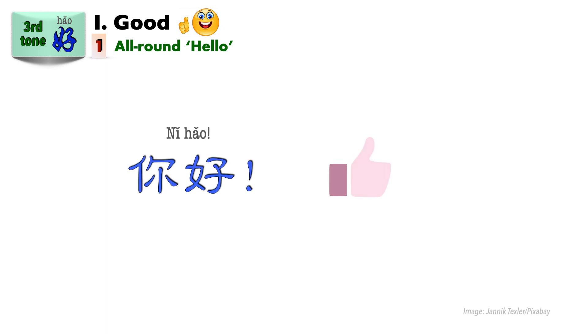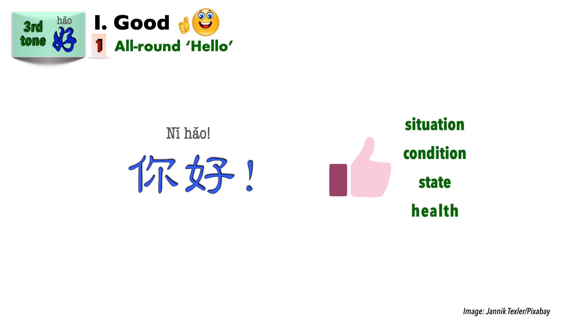So the fundamental meaning of 好 is good, nice, fine. How do we use it then? Let's look at four structures. Starting with greetings — 你好 is literally 'you good.' But specifically, what about you is good? Your situation, your condition, your state, your health. This would be clearer in its question form.